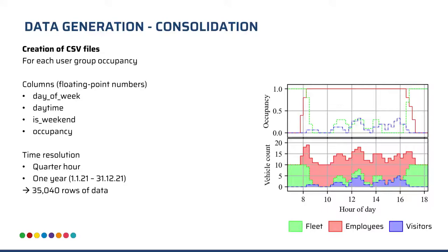Overall, you can see all occupancy values on the right side of this slide. On the bottom are the different outputs of the distribution functions, and on the top are the standardized values. For each user group, we create one CSV file containing the three input parameters — day of week, daytime, and is-weekend — as well as the occupancy as the expected output. We use a quarter-hour resolution per row over one exemplary year, 2021, giving us approximately 30,000 rows of data.